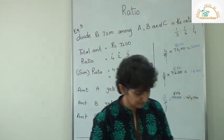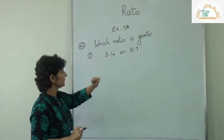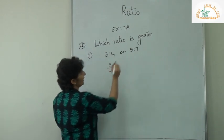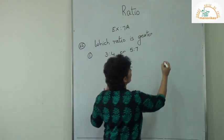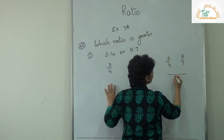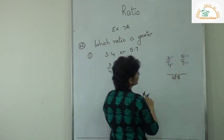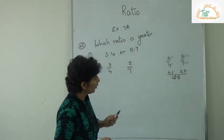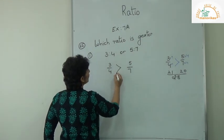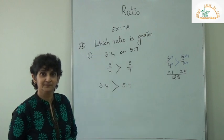Now from exercise 7A question 22: which ratio is greater, 3 is to 4 or 5 is to 7? Convert to fractions: 3/4 and 5/7. Take LCM of 4 and 7, which is 28. 4 goes 7 times into 28, 7 goes 4 times. So 3/4 becomes 21/28 and 5/7 becomes 20/28. Since 21 is greater than 20, 3 is to 4 is greater than 5 is to 7.